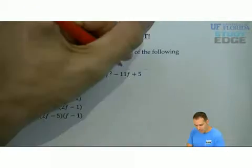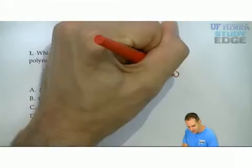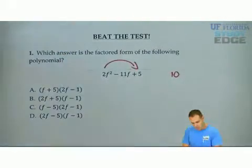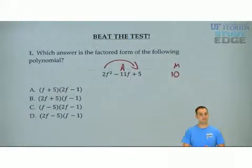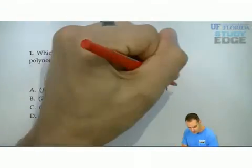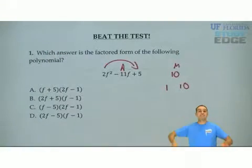What is it? 2 times 5 will give me 10, positive 10. What multiplies to 10 and adds to negative 11? The factors of 10 would be 1 times 10. I can stop right there.